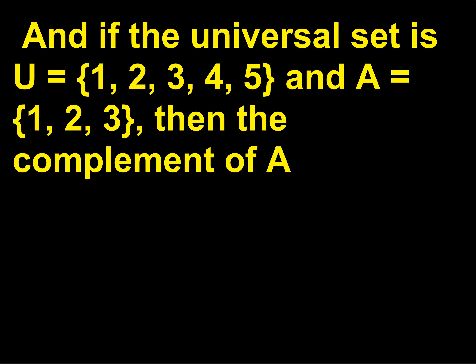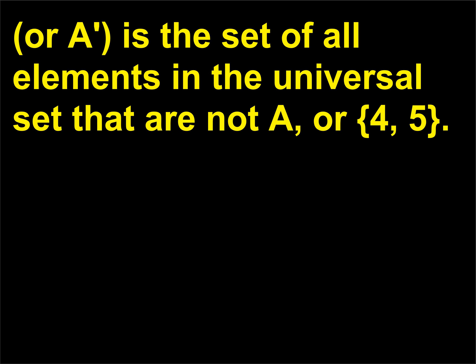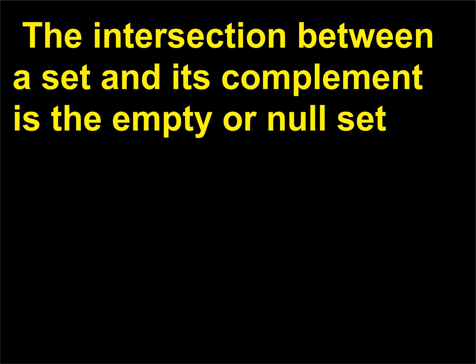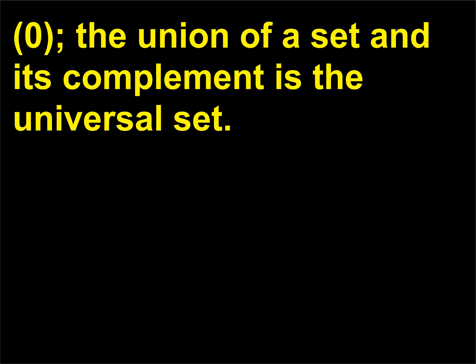If the universal set equals {1, 2, 3, 4, 5} and A = {1, 2, 3}, then the complement of A — written as Ā — is the set of all elements in the universal set that are not in A, or {4, 5}. The intersection between a set and its complement is the empty or null set (∅). The union of a set and its complement is the universal set.